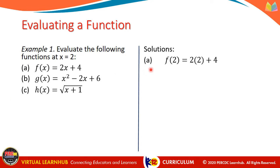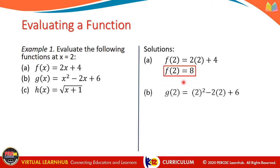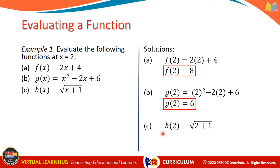Our solution would be: for letter A, f of 2 equals 2 times 2 plus 4 — we simply replace x in 2x plus 4 with 2 — giving us f of 2 equals 8. For letter B, g of 2 equals 2 squared minus 2 times 2 plus 6, replacing x with 2. For letter C, h of 2 is equal to the square root of 2 plus 1, giving us h of 2 equal to the square root of 3.